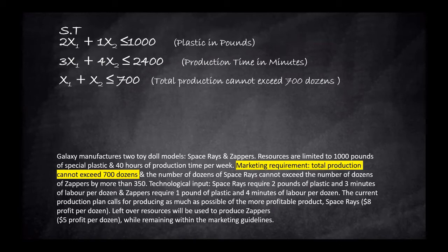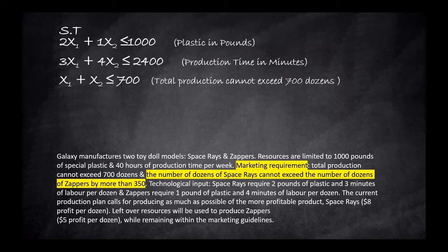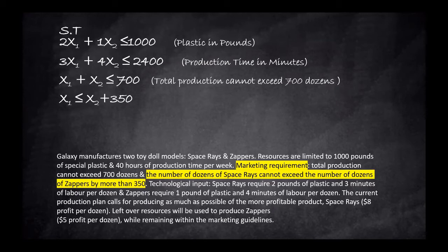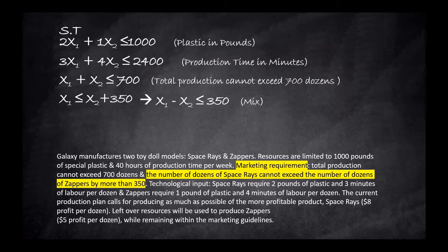The next constraint is also a marketing requirement: the number of dozens of space rays cannot exceed the number of dozens of zappers by more than 350. Translated to a constraint: x1 ≤ x2 + 350. However, constraints must have only constant values on the right hand side, so we move x2 to the other side, giving us: x1 − x2 ≤ 350. That represents the required product mix.